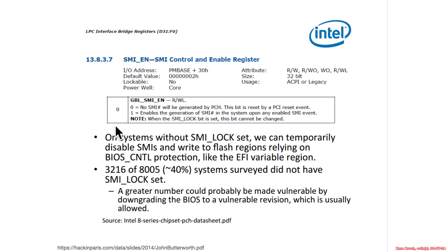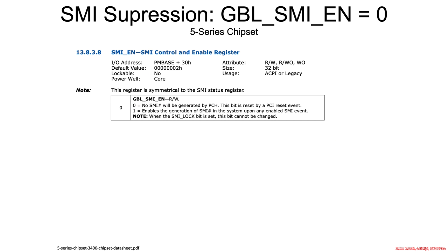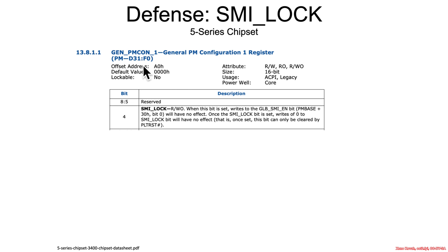If that global SMI enable is set to zero, no SMIs will be generated by the PCH. If set to one, SMIs are allowed. When the SMI lock bit is set, this bit cannot be changed, so an attacker cannot flip it from one to zero. On the five series chipset, the SMI lock bit is found in the LPC — bus zero, device 31, function zero, offset A0 — at bit four. That is what stops an attacker from disabling all SMIs and writing to the BIOS when BIOS lock enable is the only protection.